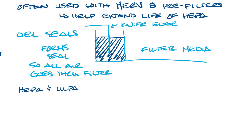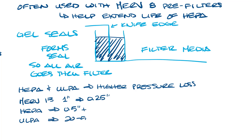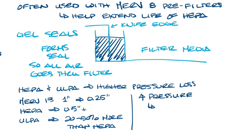One challenge to using HEPA and ULPA filters is that they have a high static pressure drop. A standard 1-inch MERV 13 filter will have a pressure drop of about a quarter inch. HEPA filters could have about a half inch or more depending on airflow, and ULPA filters would be an additional 20 to 50% more than the HEPA filter. This means you need higher pressure in your HVAC system to overcome the pressure loss through the filter.